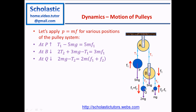Applying F = ma to particle Q in the downward direction: 2mg − T2 = 2m × (F1 + F2), since Q's acceleration relative to Earth is F1 + F2. Then applying F = ma to particle R in the upward direction: T2 − mg = m × (F2 − F1), since R's acceleration relative to Earth is F2 − F1.